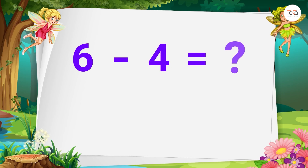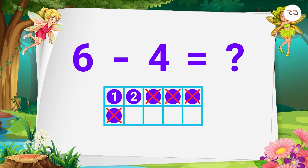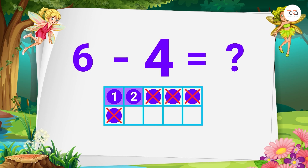Next, 6 minus 4 equals... We draw 6 dots, then cross out 4 dots. Here we have 1, 2. 2 dots left. So 6 minus 4 equals 2.